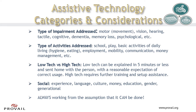Assistive technology categories and considerations. The type of impairments addressed are important. They can include motor, which is movement, vision, hearing, tactile, which means the sense of touch, cognitive, which means the person's ability to think and reason, dementia and other types of memory loss, psychological challenges, and others.